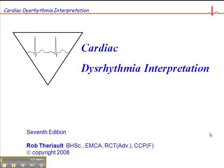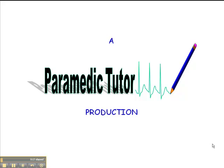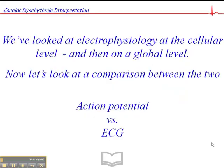And in this set of slides on page 25 of your Cardiac Dysrhythmia Interpretation Workbook, I want to look at both electrophysiology at a cellular and a global level and compare the two. In other words, what we're going to compare is the action potential, which is what happens at a cellular level, versus the electrocardiogram at the global level.